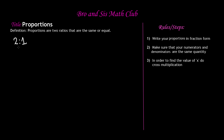Since we're doing proportions, the proportion symbol is actually two colons right next to each other — it kind of looks like a square, but this is called the proportion symbol. Now you're going to have your next ratio. Let's say student A is getting 200 pencils — how many pencils does student B get? That is going to be our X. So: 2 to 1, proportion symbol, 200 to X. This is our proportion.